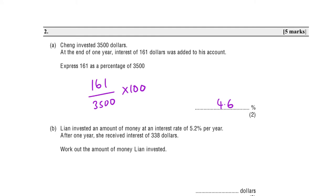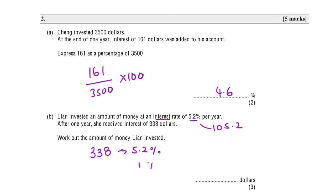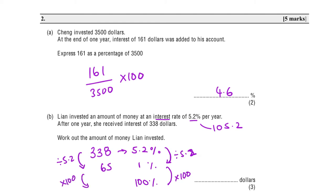The ad invested an amount of money at interest rate 5.2%. Interest of 5.2% means we're adding on, so it's 105.2%. After one year she received interest of $338. Work out the money she invested. If her interest was $338, that means $338 is equivalent to 5.2%. To find 100%, we find 1% by dividing by 5.2: 338 ÷ 5.2 = 65. Then multiply by 100 to get 6,500.